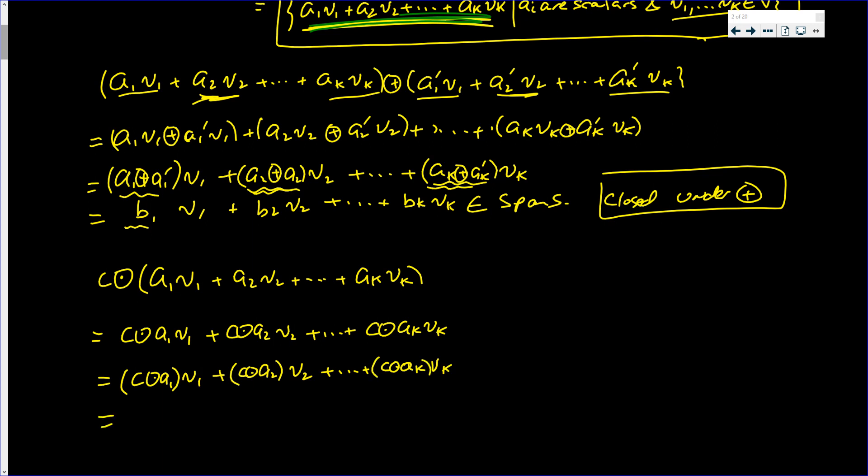But this is—I already used b—so call it d1·v1 plus d2·v2, all the way down to dk·vk. But this is exactly the elements that are in the span of S. It's exactly what's in the span of S—it's linear combinations of those. It's a scalar times v1 plus a scalar times v2, all the way down to a scalar times vk.